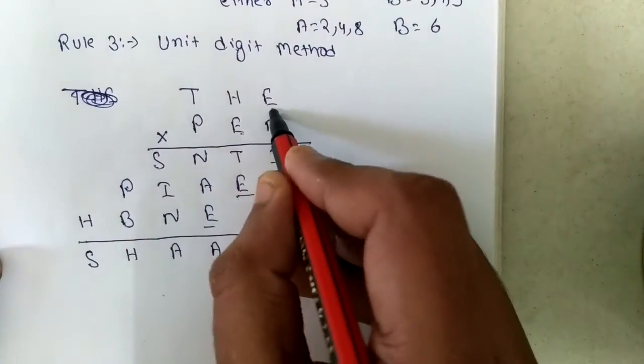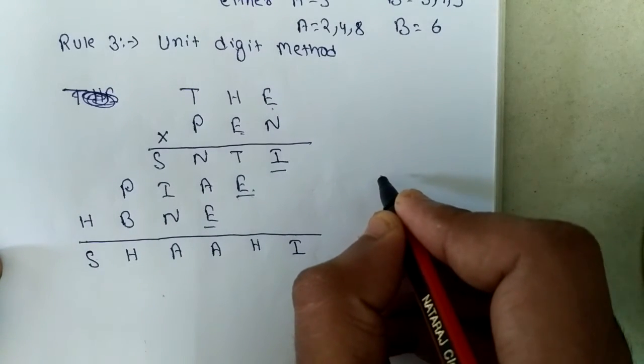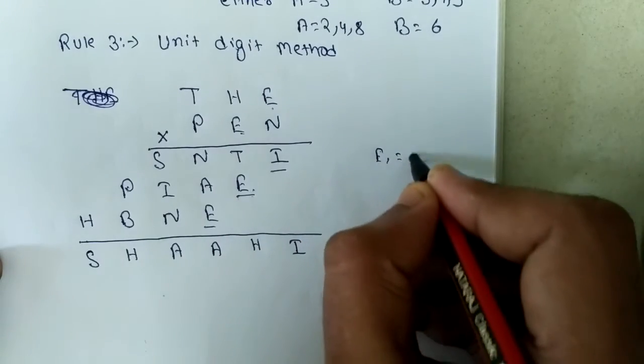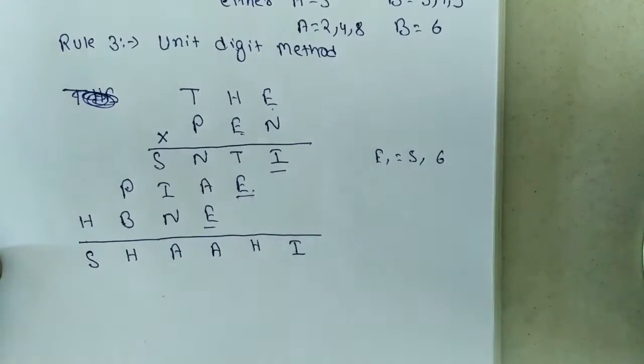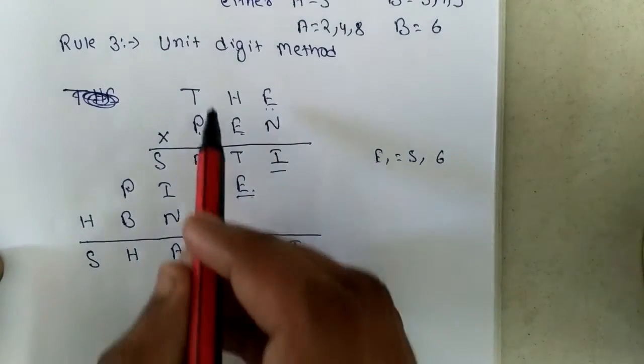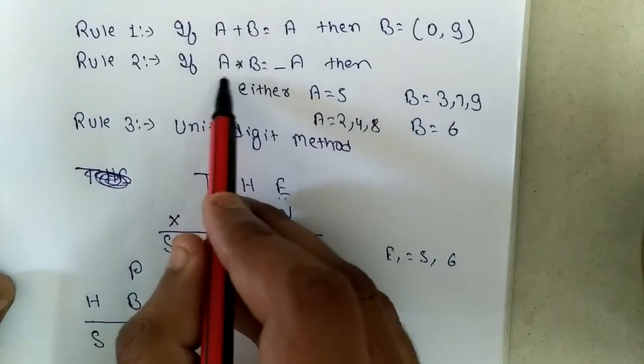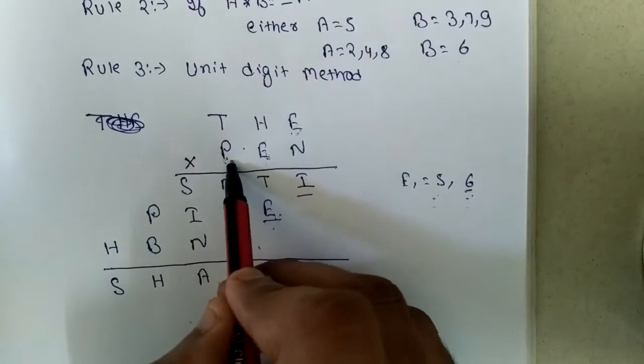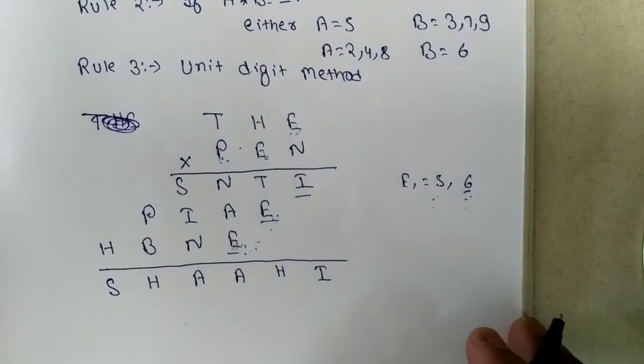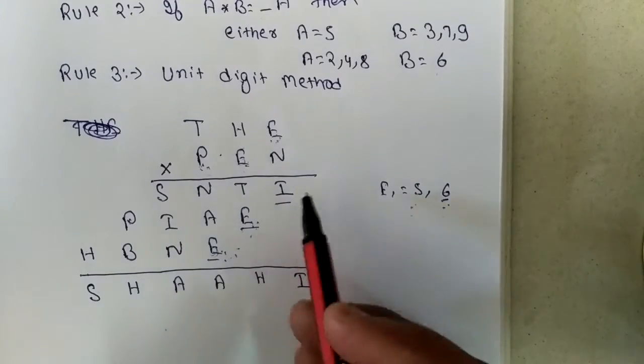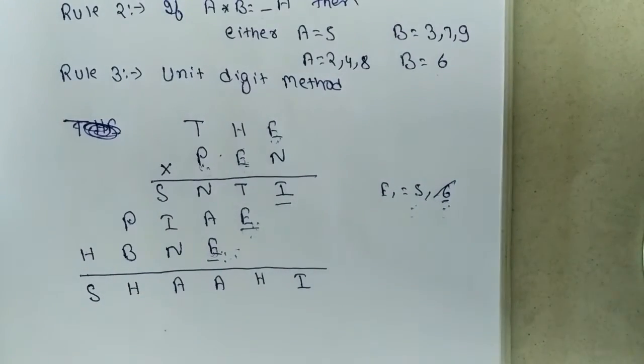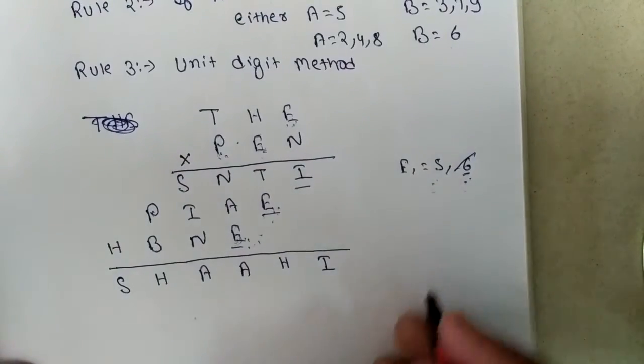We are seeing that E into E equal to E. It is only possible when E equal to 5 or 6. E must not be 6, but we also see here that P into E equal to E. Based on rule number 2, A into B equal to A, P into E equal to E. This is only possible when E equal to 5. So E must not be 6.